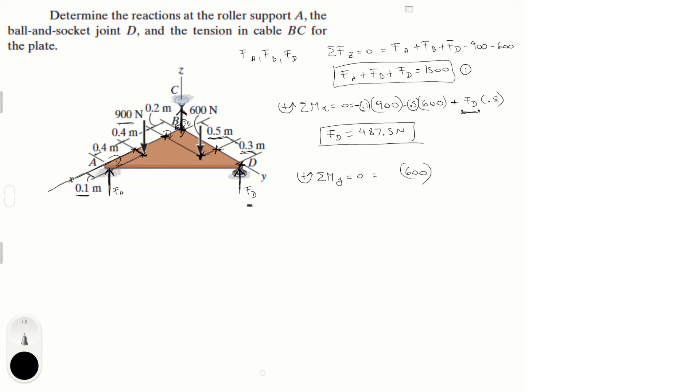So about the y-axis, what's creating a moment? Well, let's start with the 600 newton force times the distance from the y-axis which is given by 0.2, and it's trying to turn it clockwise so let's say it's negative. The 900 newton force now times 0.6, it's also negative. Distance from here to here is 0.6.